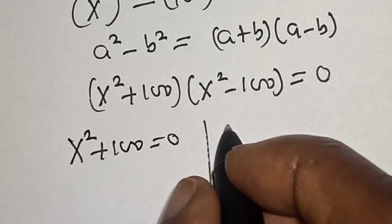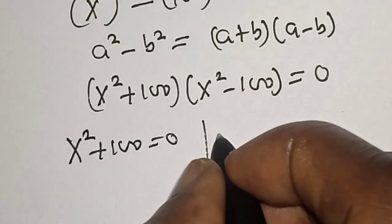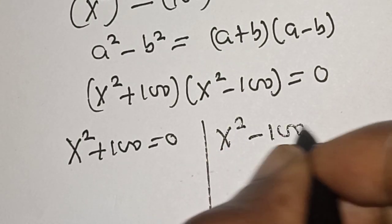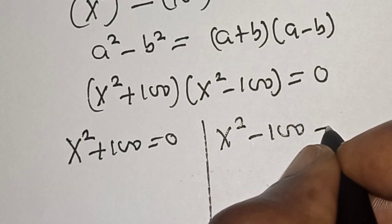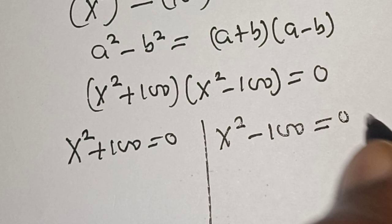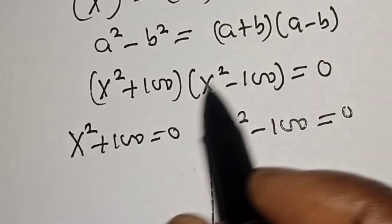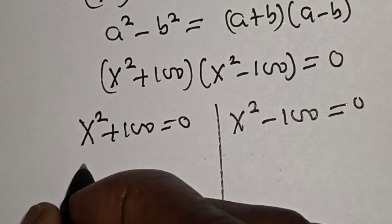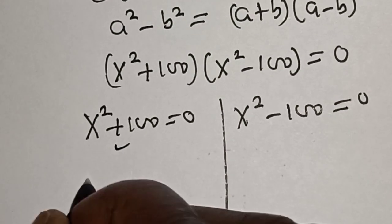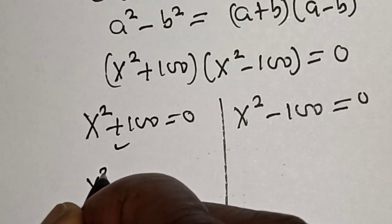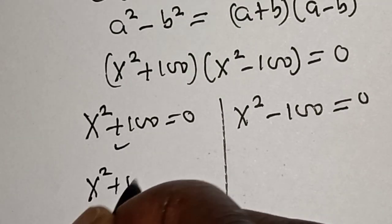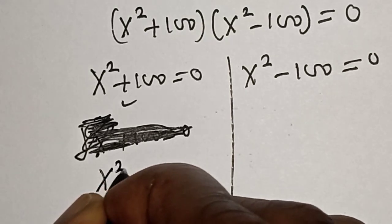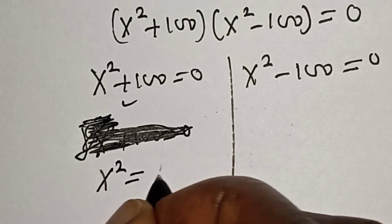There are two cases here. Either s² + 100 is equal to 0, or s² − 100 is equal to 0. We want to find all the values of s from this.